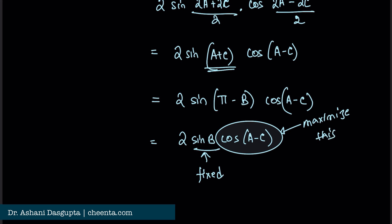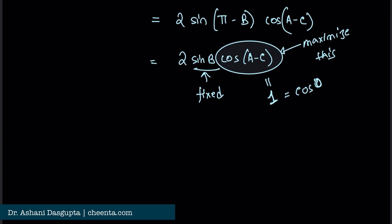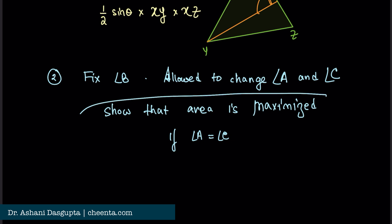The maximum value of cos(A − C) is 1, which occurs when A − C = 0, i.e., angle A equals angle C. Therefore the area is maximized when angle A equals angle C — this proves Part 2.